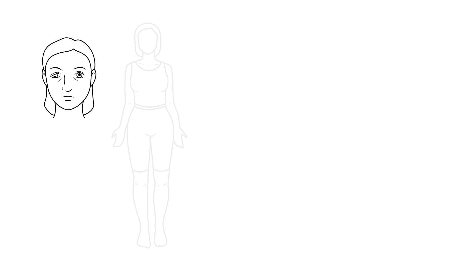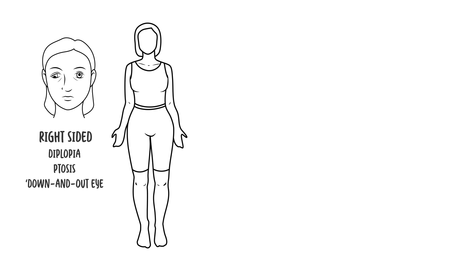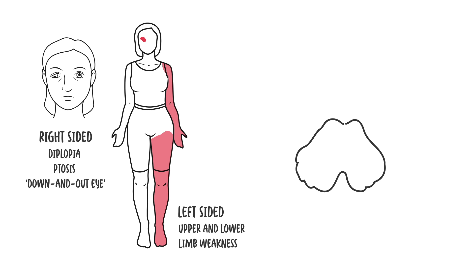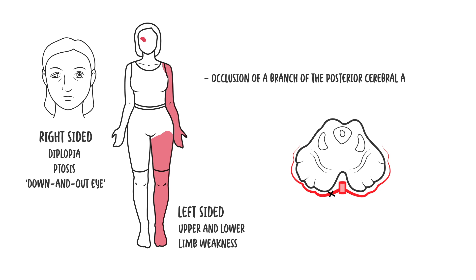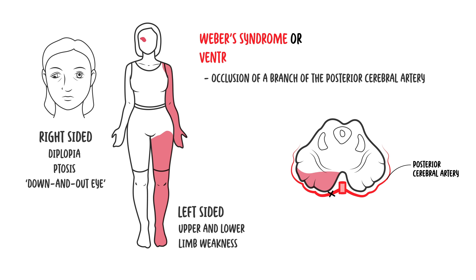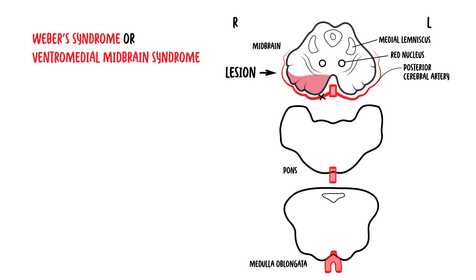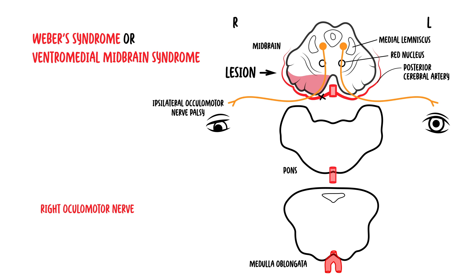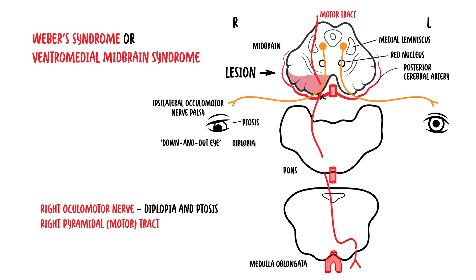The first syndrome: a woman presents with sudden right-sided diplopia and ptosis with a down-and-out eye on the right side. She also complains of left-sided weakness of her upper and lower limbs. These signs and symptoms are caused by occlusion of a branch of the posterior cerebral artery, causing Weber's syndrome, or ventromedial midbrain syndrome. The lesion is on the right side, resulting in ipsilateral oculomotor nerve palsy causing diplopia, ptosis, and the eye going down and out. It also causes right pyramidal motor tract involvement, resulting in contralateral hemiparesis, because the motor fibers decussate in the medulla.